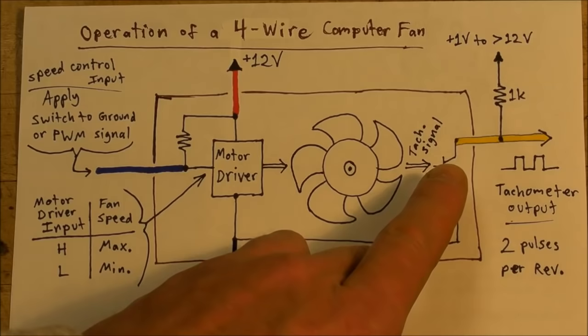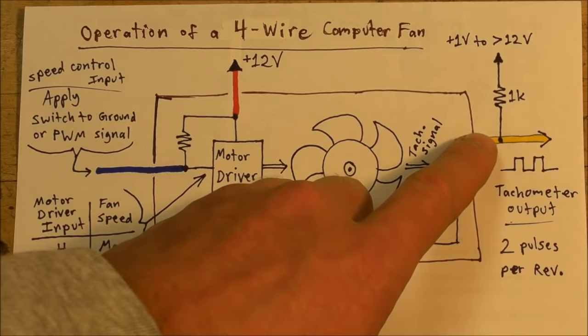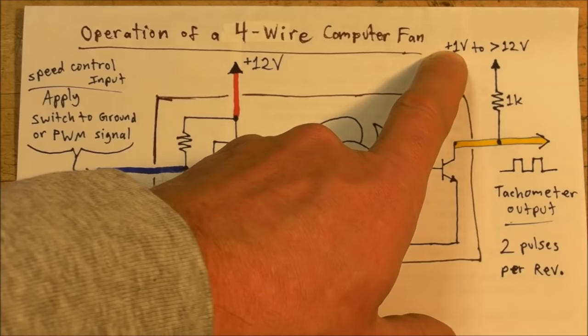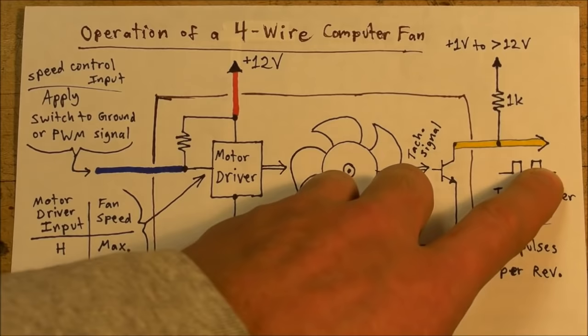And on the output end here, we have an open collector transistor going down to ground. The open collector is on the yellow wire. If you hook up a 1 kiloohm resistor pulled up high, anywhere from 1 volt to even greater than 12 volts, the voltage range here is very wide and you can still get a readable square wave pulse output, and that comes out as two pulses per revolution of the fan blades.